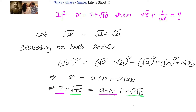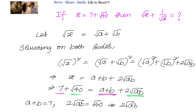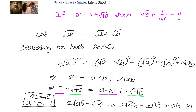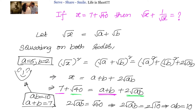So we need to find a and b such that a plus b equals 7 and ab equals 10. We can form a quadratic, or by intuition, a equals 5 and b equals 2, because 5 plus 2 is 7 and 5 times 2 is 10. So root x is now equals to root 5 plus root 2.